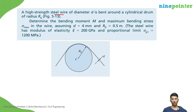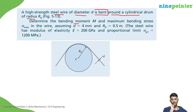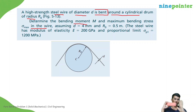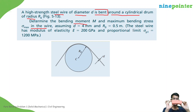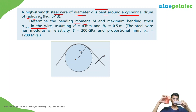The problem involves a high-strength steel wire of diameter D bent around a cylindrical drum of radius R0. We need to determine the bending moment M and maximum bending stress sigma max in the wire. Initially the wire is straight with a circular cross-section of diameter D; the person bent it around the drum.